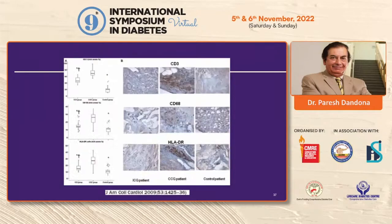Looking at pro-inflammatory genes: CD3 as an index of monocytes, CD68 as an index of macrophages, and HLA-DR as another pro-inflammatory index — all show marked diminution with insulin infusion compared to the middle panel.